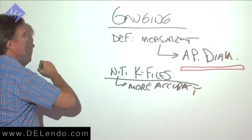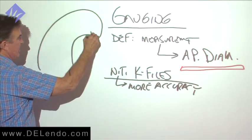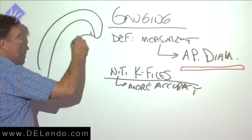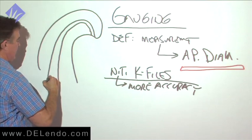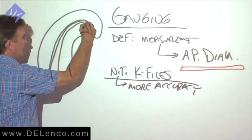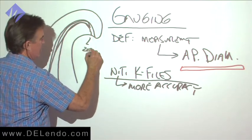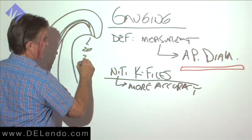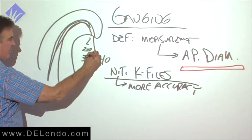If you're in a canal that's curved and the end of the root canal is big, you're not going to be able to tell it with a stainless steel file because it's going to bind laterally. Its stiffness is going to tell you that this is a 20 terminus when actually it's a 30 or a 40. And that's the setup for an overfill.